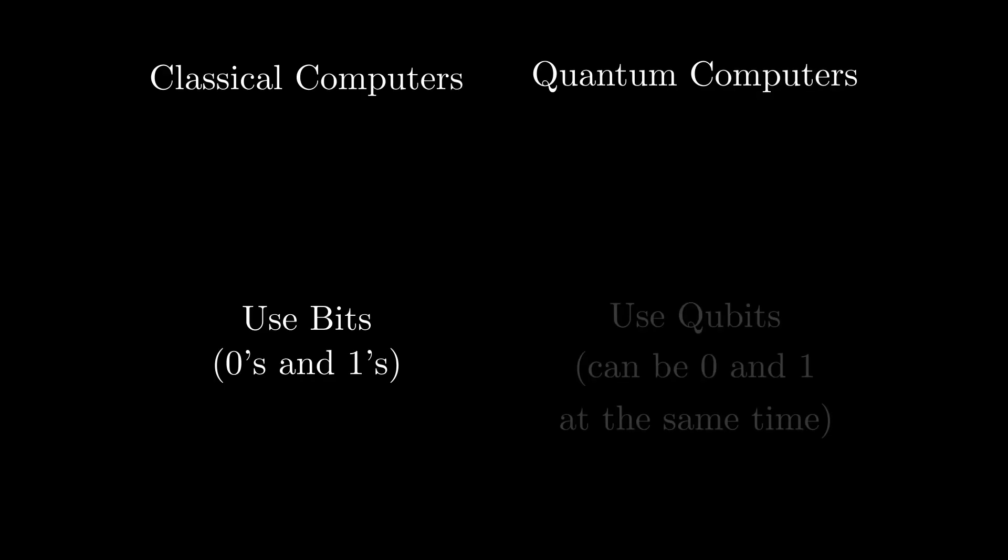Classical computers use binary, zeros and ones, to store and process their data. Quantum computers, on the other hand, use qubits or quantum bits, which can be zero and one at the same time.